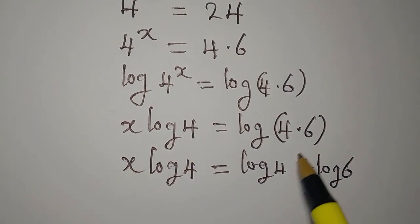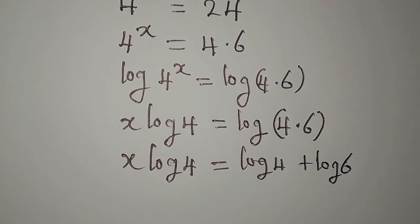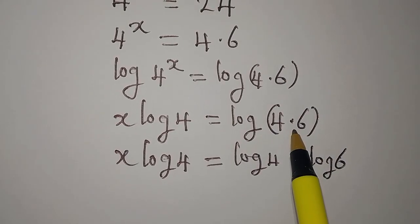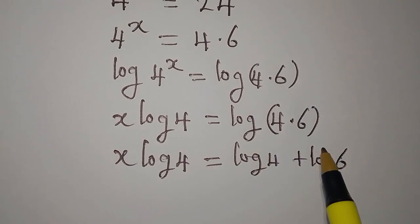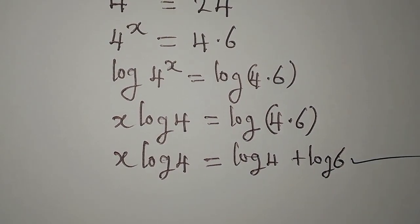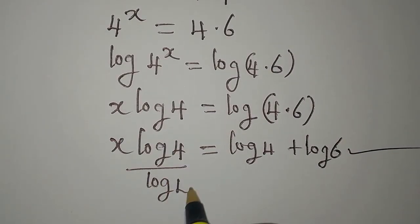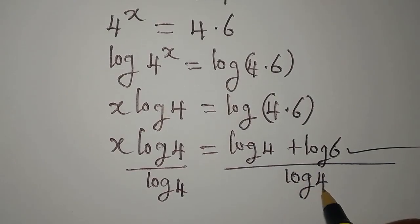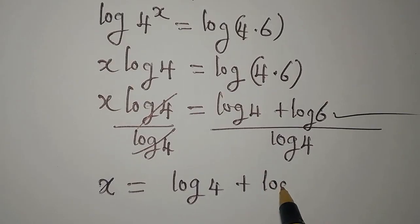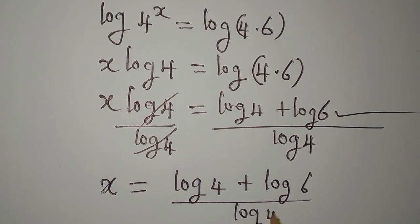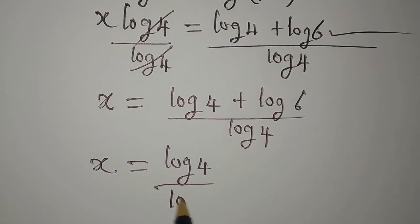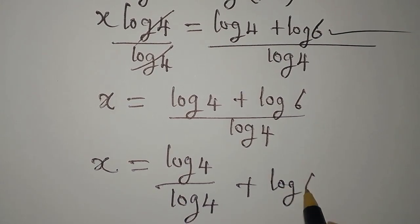...log 4 plus log 6, because when you're multiplying inside a log you add the logs. If it were division it would be log 4 minus log 6. So we have x log 4 = log 4 + log 6. Now divide both sides by log 4, giving us x equals (log 4 + log 6) all over log 4.